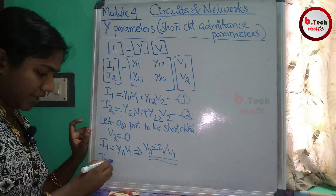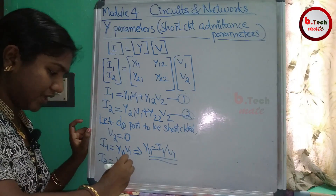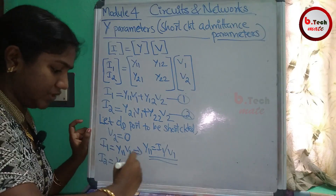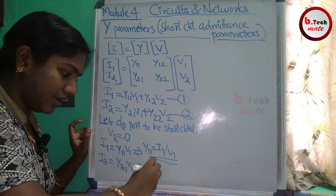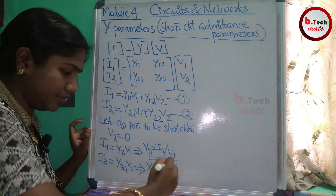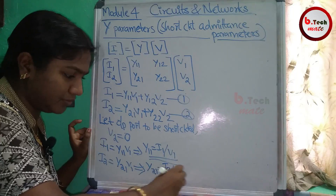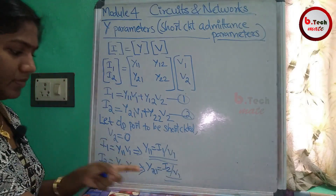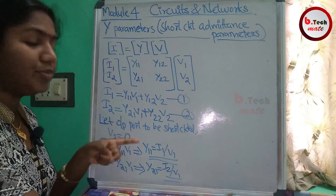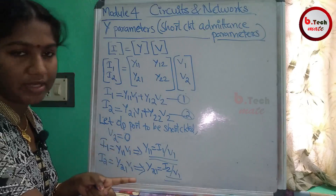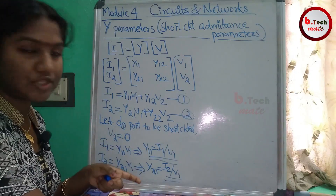I2 equals Y21·V1. Therefore, Y21 equals I2 by V1. With the output port short circuit, we get two parameters: Y11 and Y21.